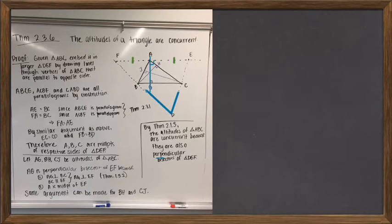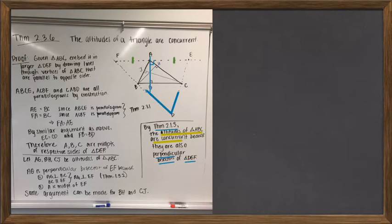The real genius of this proof is that it discovers a larger triangle whose perpendicular bisectors are exactly the altitudes of the smaller triangle in the middle. Therefore, because we already knew that the perpendicular bisectors of a triangle are concurrent, that implies the altitudes of our original triangle are concurrent. The proof takes the small triangle and its altitudes and blows it up into a bigger triangle and its perpendicular bisectors.